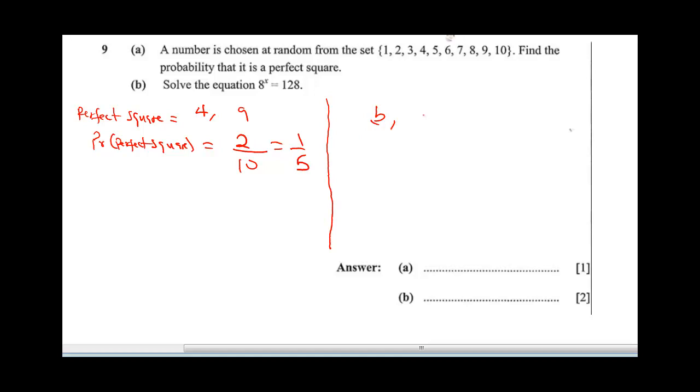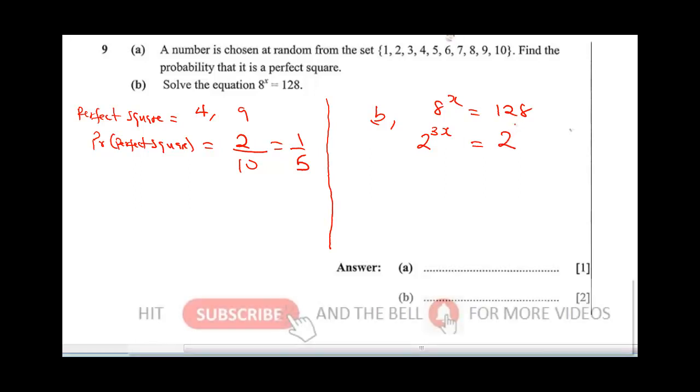The B part of the question says, 8 to the power x equals 128. How do we solve this? This is an exponential equation. 8 raised to power x, 8 is 2 raised to power 3, so it's 2 to the 3x. And 128 is 2 raised to power 7.